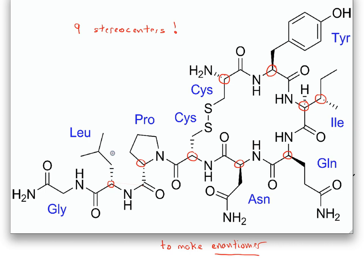I'll do one or two stereocenters to get the flavor, but we could very easily draw the enantiomer of this molecule. We simply take all of our dashes and turn them into wedges, and take all of our wedges and turn them into dashes. That is what the enantiomer of oxytocin would look like — we're basically just doing single swaps on every single stereocenter.